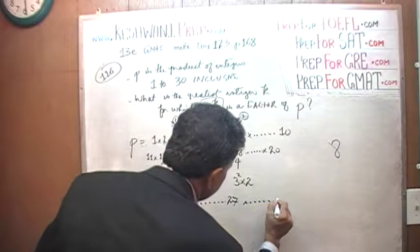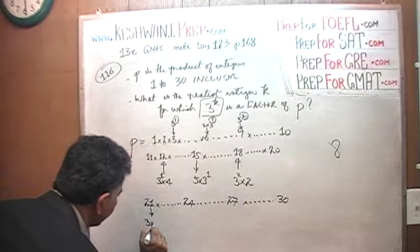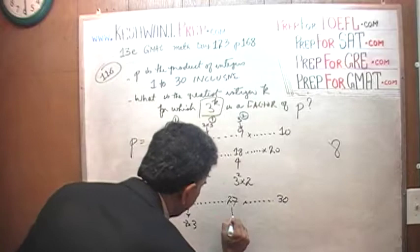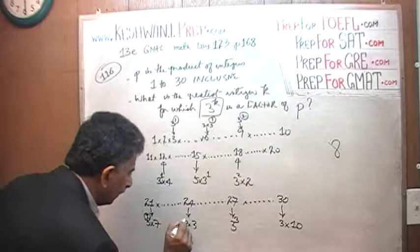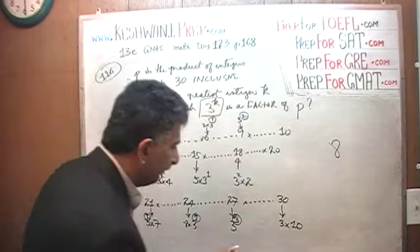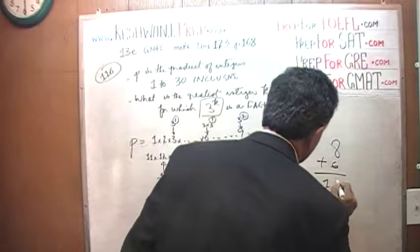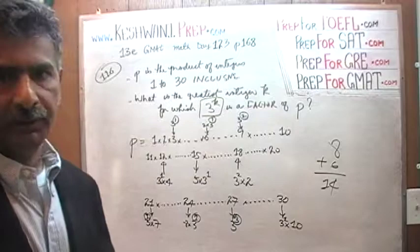Let's work them out. 21 can be written as 3 times 7 — one power. 24 can be written as 8 times 3 — one power. 27 can be written as 3 cubed — three powers. 30 can be written as 3 times 10 — one power. So from 21 to 30 we add 1 + 1 + 3 + 1 = 6 more powers. We had 8, and 8 plus 6 equals 14. The answer is 14.